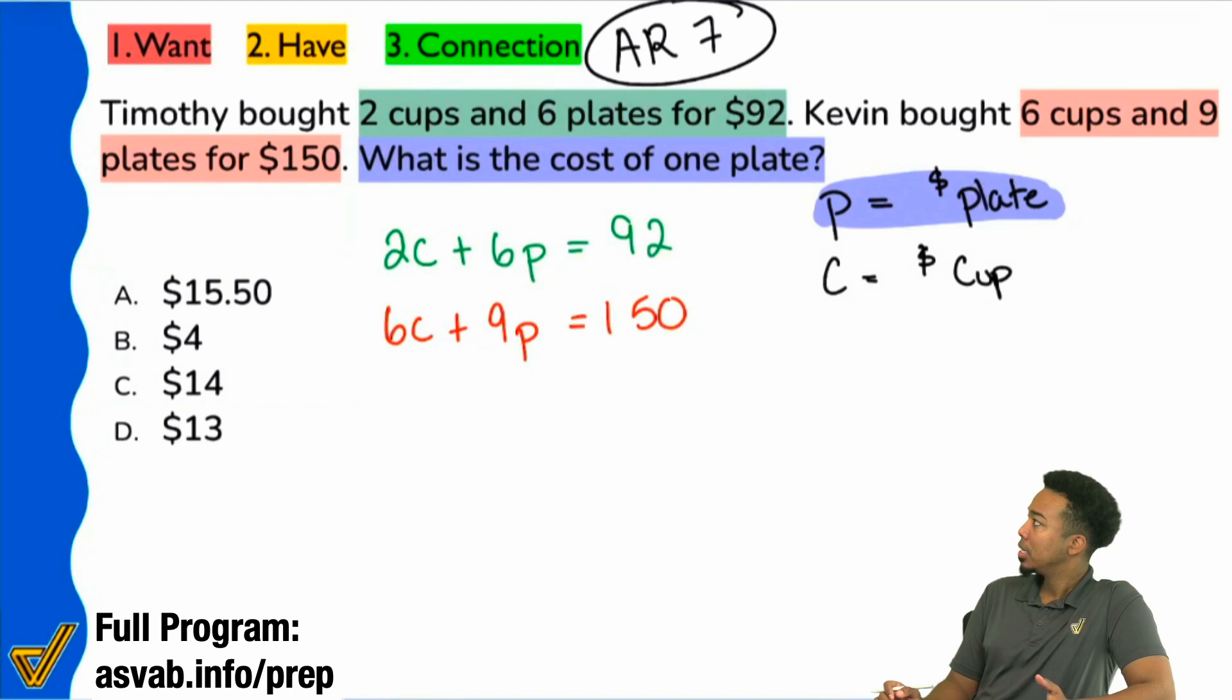So we can use elimination, we can use substitution. But for this one, what I'm going to recommend you do is actually use elimination. Try to eliminate one of the variables. And I noticed that, hey, two and six, although they're not the same number in the front that I can't eliminate, I know that if I multiply two by three, I'm going to get six. So if I multiply this whole top equation by three, I'll have 6C and this will be 6C allowing me to eliminate. That's really what I want to do.